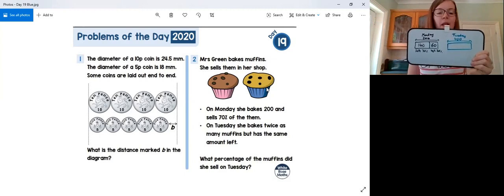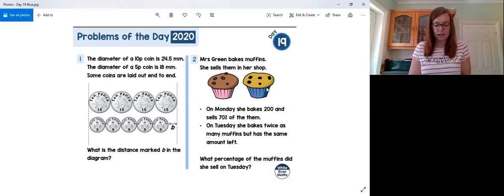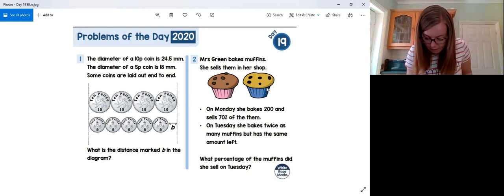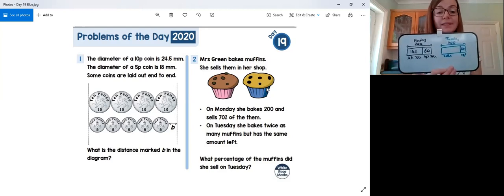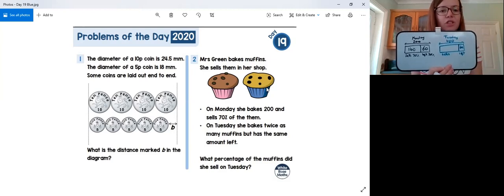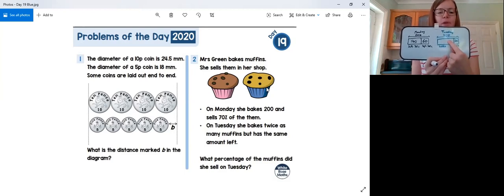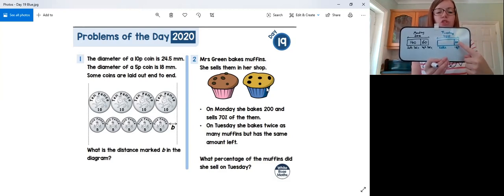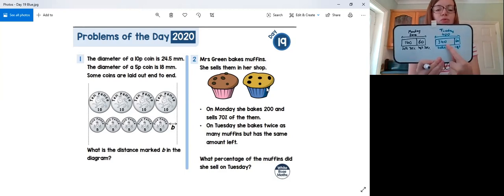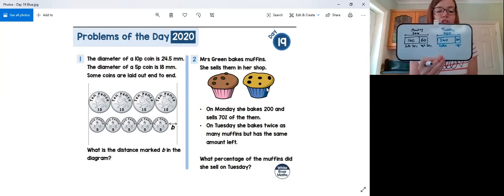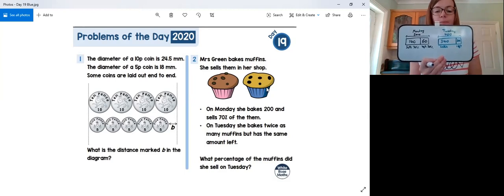On Tuesday, we're told she has the same amount left. So we're going to start with this 60. She has 60 left. So then this bit of the bar is how many she sells. Now it asks us what percentage of muffins she sold on Tuesday. So before we can work out the percentage, how many did she sell? She made 400 and she had 60 left at the end. So we're going to do 400 take away 60, which is 340. She has 340 that she sold. So what percentage of muffins did she sell on Tuesday?